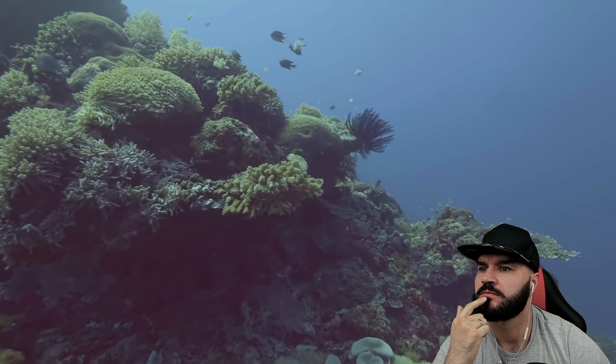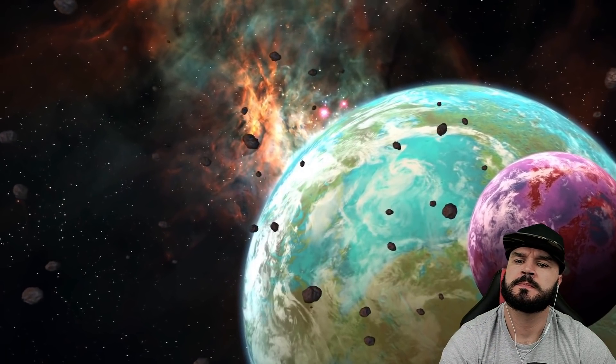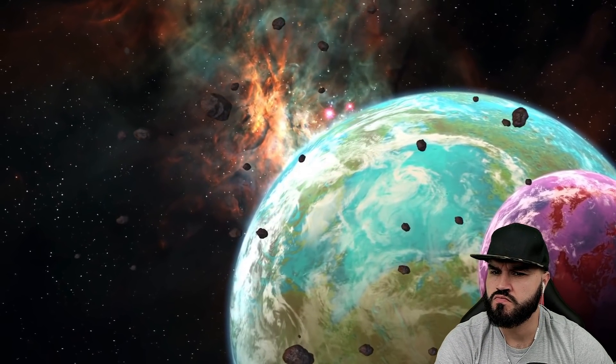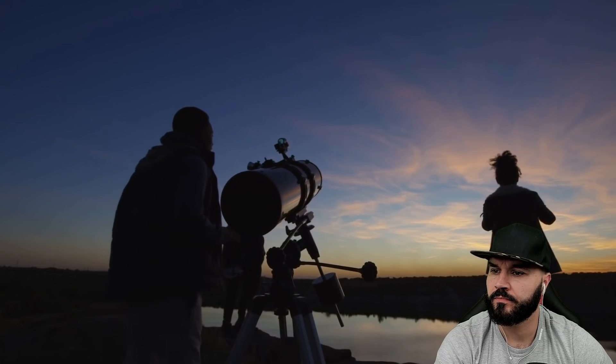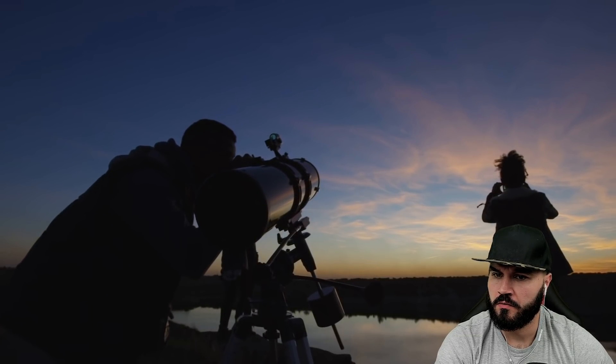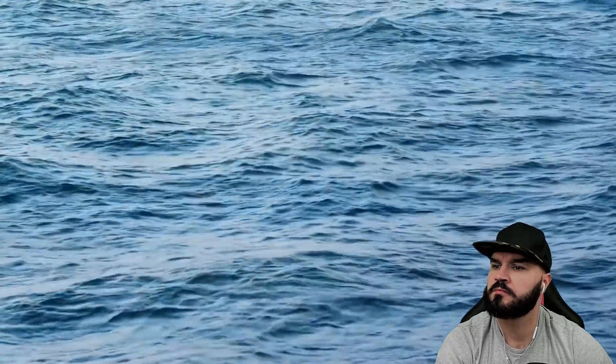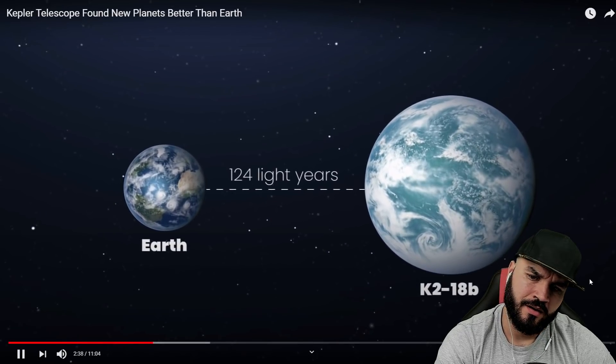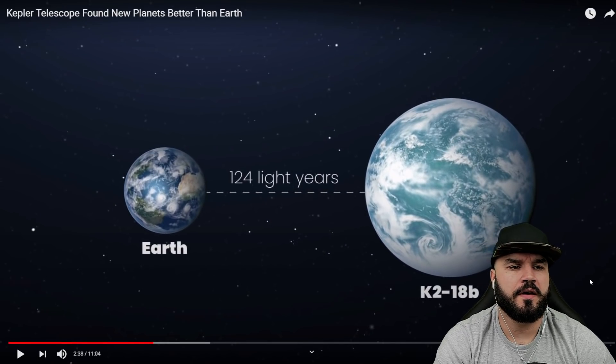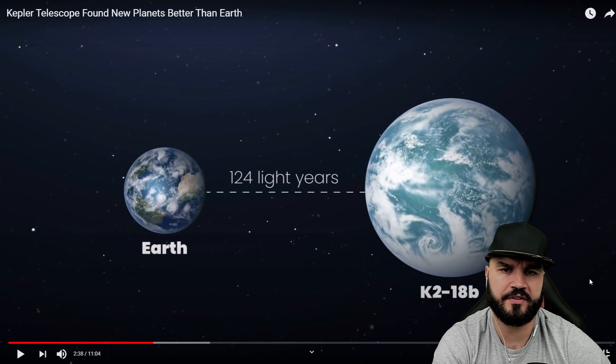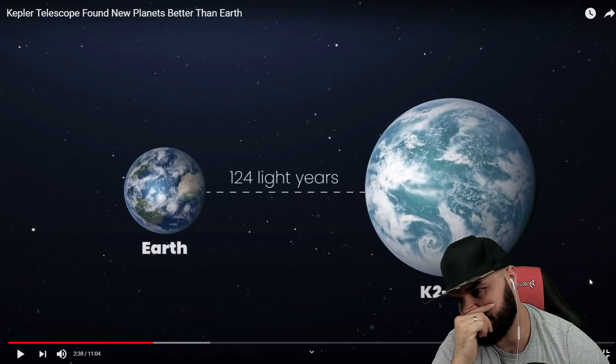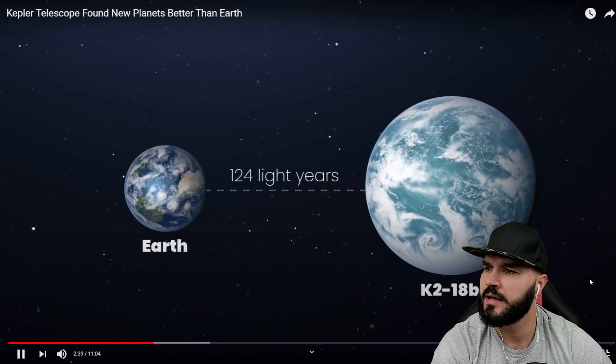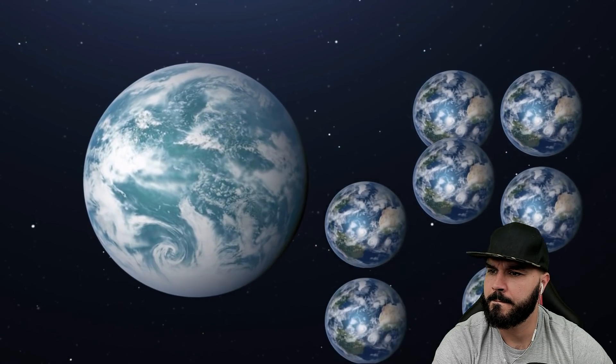One such exoplanet discovered by Kepler that has recently generated excitement among researchers is called K2-18b. In September 2019, two scientific teams independently announced that they found signs of liquid water in the planet's atmosphere. Situated 124 light years away from Earth. How on earth do they measure that? How do the instruments they've got actually measure that there might be water there 124 light years away? It just beggars belief doesn't it really. K2-18b is about eight times the mass of Earth and three times as big.